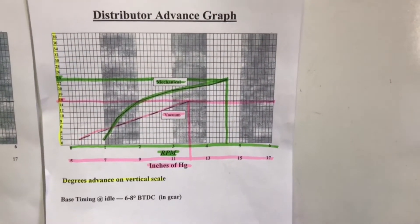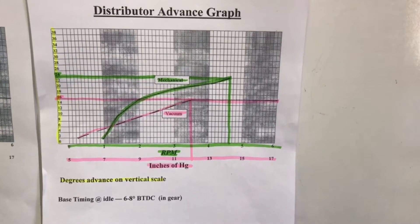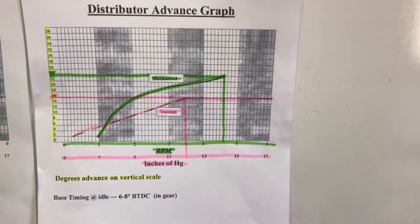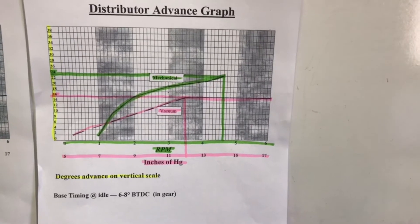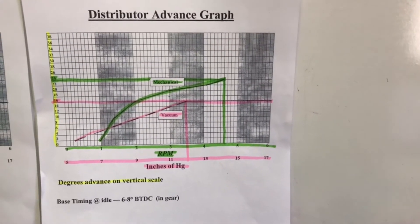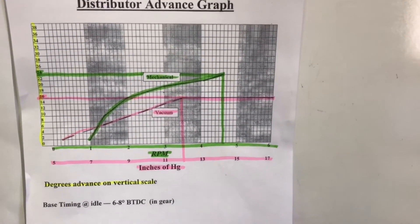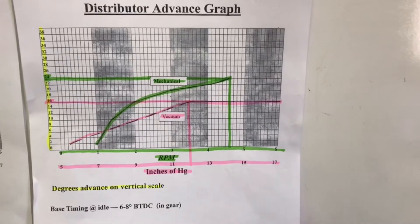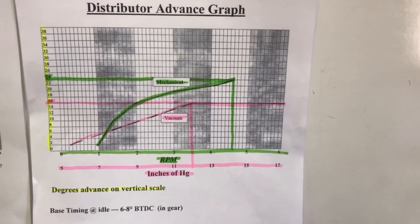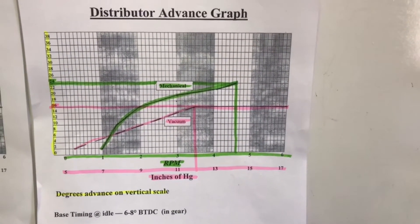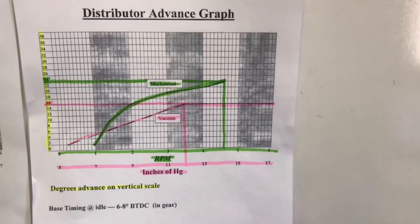This distributor has two types of timing advance: a mechanical and a vacuum. The mechanical uses springs and weights, and the vacuum uses a spring and pressure differential — basically the pressure difference between atmosphere and manifold pressure.